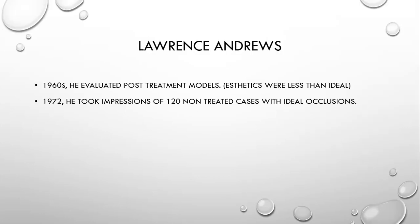To understand the second-order bends, you have to go into the history of Lawrence Andrews. As you know, he was a famous orthodontist who introduced six keys to normal occlusion. The question is how did he reach those six keys? In the 1960s, when he was not very much satisfied with the results, especially the aesthetics of his own cases, he decided to take impressions, make models, and evaluate his cases thoroughly.